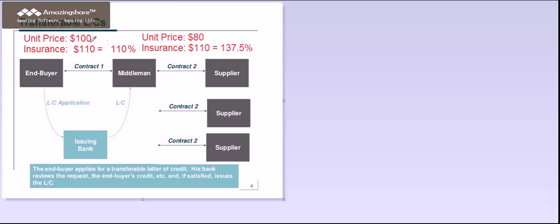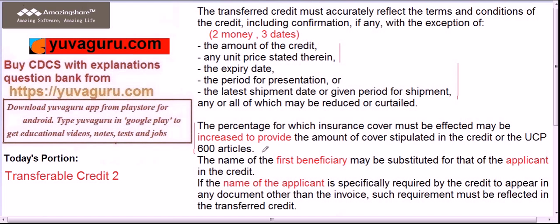Now this LC is transferred to the second beneficiary — let's consider only one supplier. The middleman subtracts his commission and gives a unit price of $80 to this second supplier. If this supplier applies 110% insurance on $80, the insurance would be $88. But in the main LC the insurance required is $110. So what must be done is bring this insurance amount to $110 as required in the main LC. That means the insurance percentage in the second LC becomes 137.5%, whereas in the main LC it's only 110%. Remember: the insurance in the second LC needs to be brought to the amount in the first LC — not the same percentage, but the same amount.